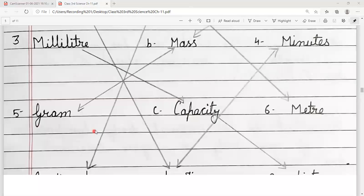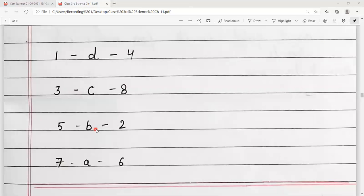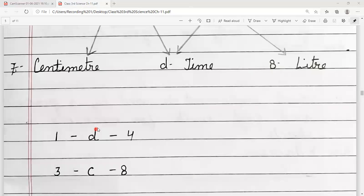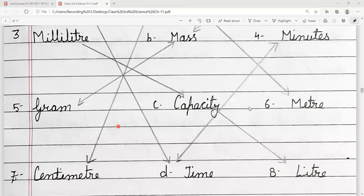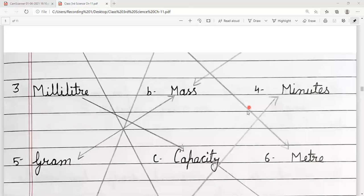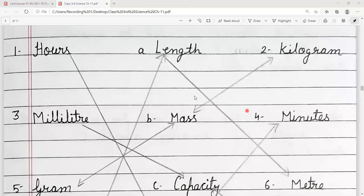Ab next hai hamara number seven. Number seven diya hua hai, centimeter. Centimeter kis se match kar raha hai? Centimeter match kar raha hai number six se. Means, meter se. Aur, woh match kar raha hai length se.